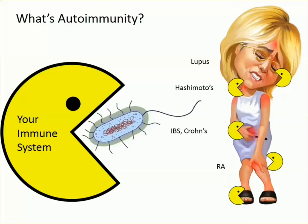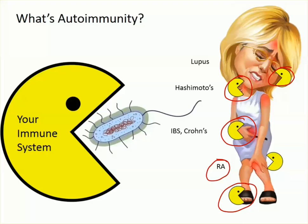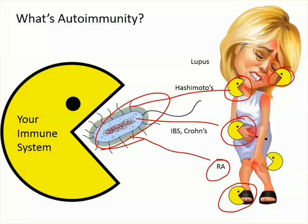When your immune system is confused and starts attacking your skin, you can have lupus or scleroderma. If it starts attacking your thyroid, you can have hypothyroid conditions, Graves' disease, or Hashimoto's thyroiditis. If it attacks your digestive system, you can have irritable bowel or Crohn's disease. If it attacks your joints, you can have RA. Autoimmune condition is when your immune system can't tell the difference between a bug and your own tissues.